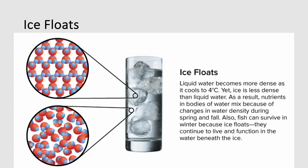Another property of water is that ice floats. Most substances get more dense when they freeze, but water is the opposite — water actually becomes less dense. Liquid water becomes more dense as it cools to four degrees centigrade, yet ice is less dense than its liquid form. As a result, nutrients in bodies of water mix due to changing water density during spring and fall, and fish can survive in winter because ice floats on top, insulating the water underneath.